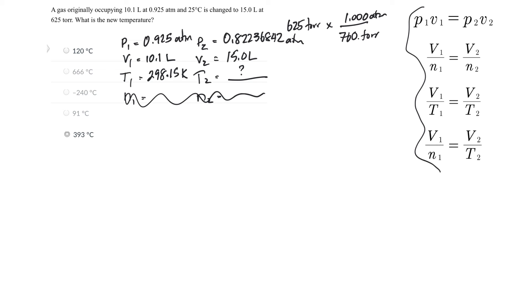Again, these formulas by themselves don't work, but a combination will work. So P1V1 over T1, P2V2 over T2. And this time I'm solving for T2. So T2 is going to be equal to T1P2V2 over P1V1.